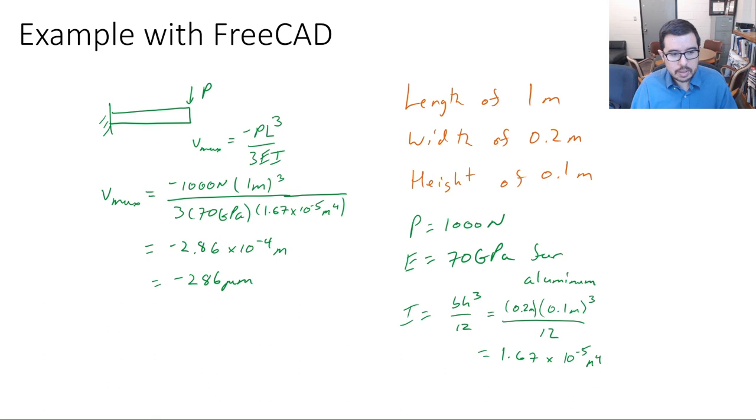So let's get started here. And again, cantilevered beam point load at the end. Here are the dimensions we're going to be using. Here's the force. Here's the elastic modulus that we're going to be using. And here's some of the calculations that we expect to have shown in our results. So about minus 290 micrometers in deflection.